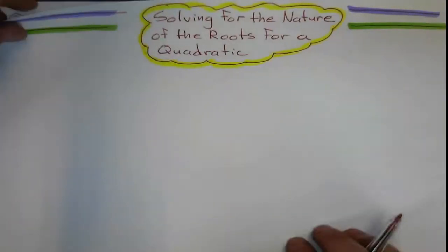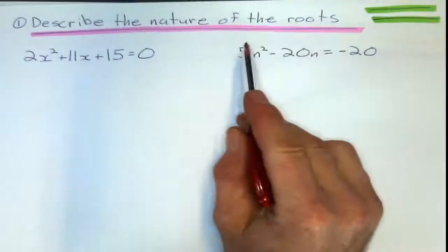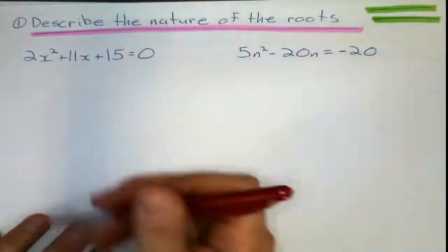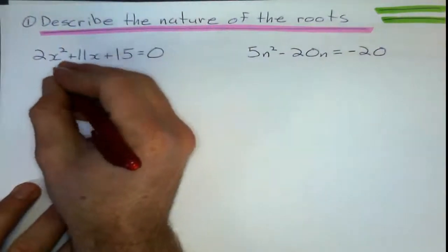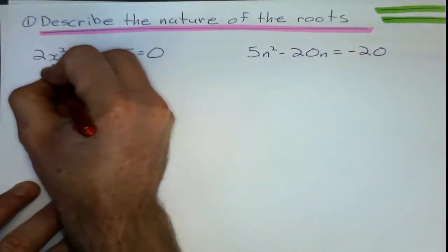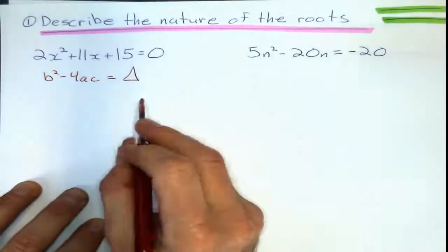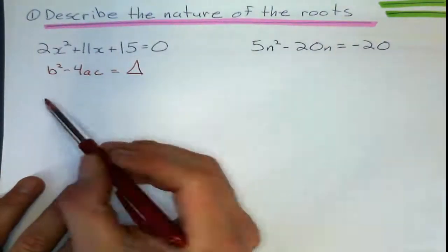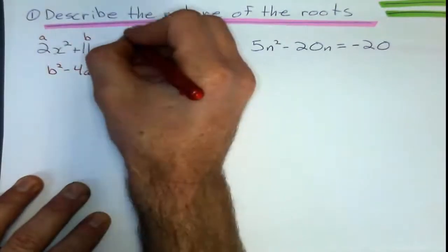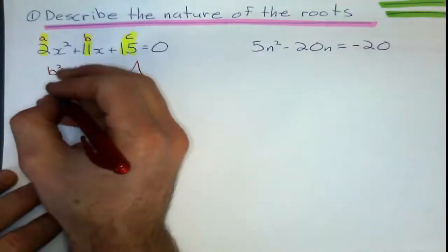Okay, so let's do some examples here. Describe the nature of the roots. To do that, I have to know my discriminant, and that was under the radical of the quadratic formula. That's b squared minus 4ac. We use the triangle symbol for the discriminant. Now remember, a is going to be 2, b is going to be 11, and c is going to be 15.